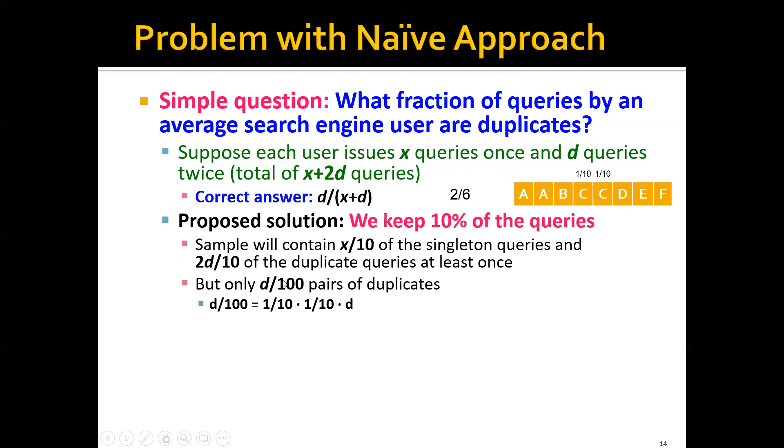Why would this happen? Remember that we would naively keep 10% of the queries. For this query C, we have a 1 over 10 chance of keeping this one, and similarly a 1 over 10 chance of keeping this one. Therefore, the probability that we will keep both of these two queries is actually only 1%.